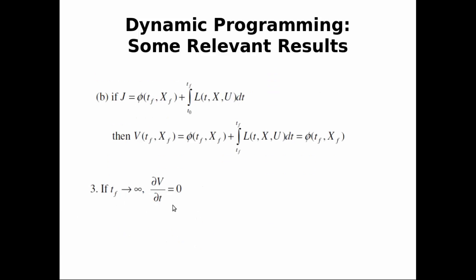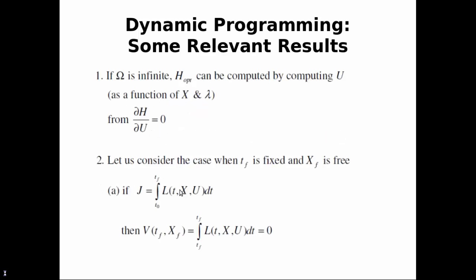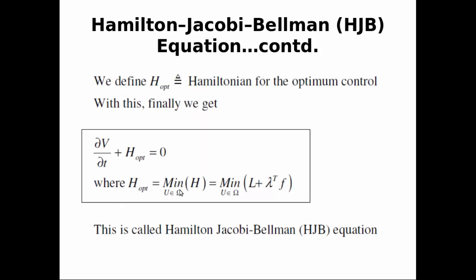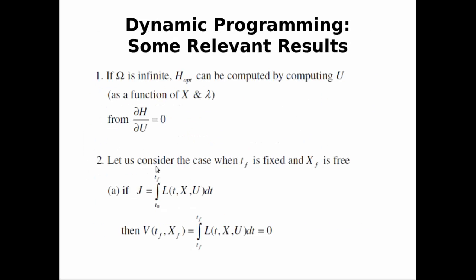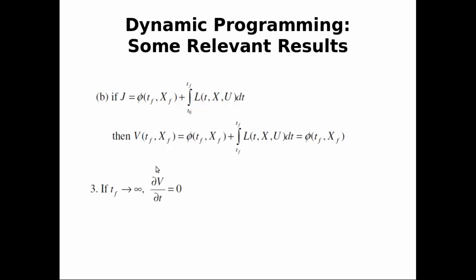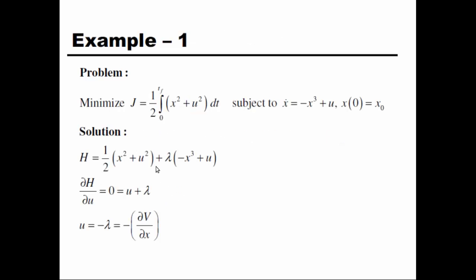If the control input u is unconstrained (Ω→∞), all u are admissible and we solve for the optimal u by setting ∂H/∂u = 0. If tf→∞, then dV/dt→0, simplifying the HJB equation so that only H = 0 remains — an ordinary differential equation.